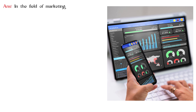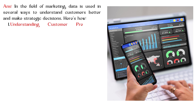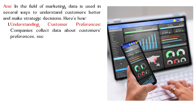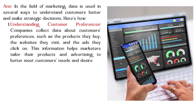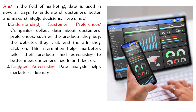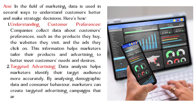How is data used in the field of marketing? In marketing, data is used in several ways. Understanding customer preferences: companies collect data about customers' preferences — the products they buy, websites they visit, and ads they click on — to tailor products and advertising. Targeted advertising: data analysis helps marketers identify their target audience more accurately. By analyzing demographic data and consumer behavior, marketers can create targeted campaigns that resonate with specific groups of people.